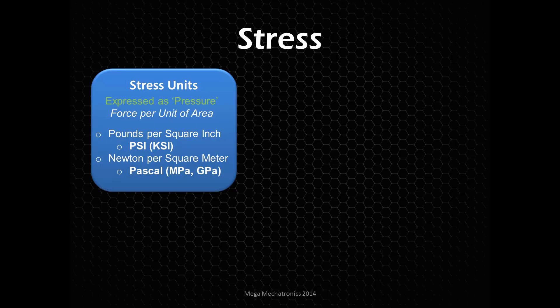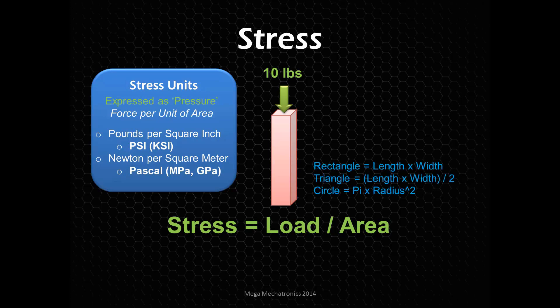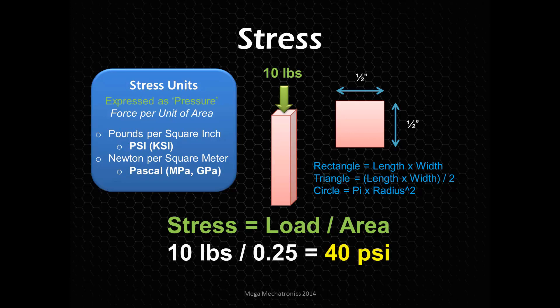Let's say we have this material here, this column, and we apply 10 pounds to it. Stress is the load of 10 pounds divided by the area. We're going to have to calculate the area. For a square or rectangle it's length times width. Let's say it's a half inch by half inch, so 0.5 times 0.5 gives us 0.25. So: 10 pounds divided by 0.25 gives us 40 PSI of stress within that column. That's why something like a thumbtack can press into a wall so easily — that point is so tiny, which increases the PSI to a very high number.